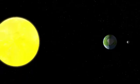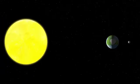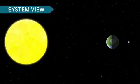Now we can see the entire Earth, moon, and sun system. We call this system view. Of course, this view is not to scale.